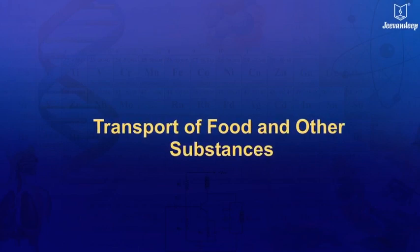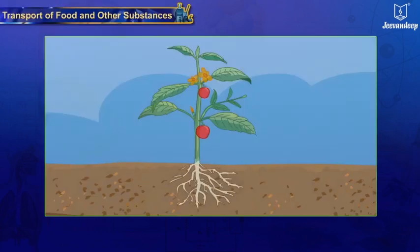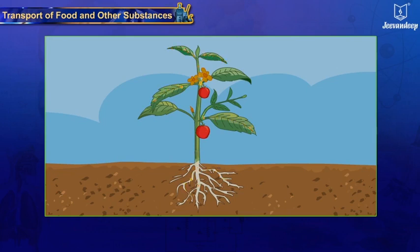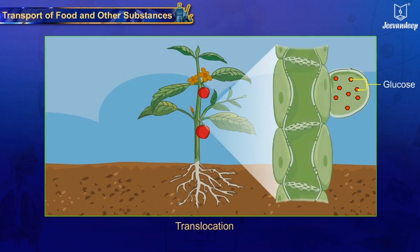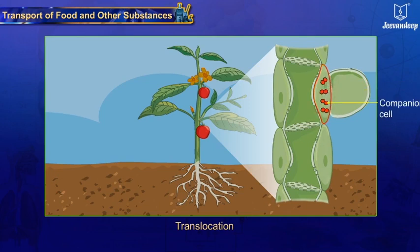Transport of food and other substances: the food manufactured by the leaf cells is transported to each and every cell of the plant for nutrition, and to the roots, fruits, and seeds for storage. This process is called translocation. It takes place through phloem in upward as well as downward direction. Glucose synthesized by cells in the green leaves is converted into sucrose and actively transported into the companion cells of the nearest phloem tissue with the expense of energy from ATP.